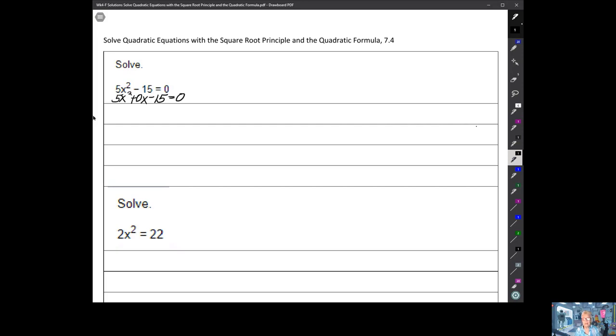When you have 0x, that is x to the 1, is missing in action, then this is what you do. You use the square root principle of solving quadratic equations.